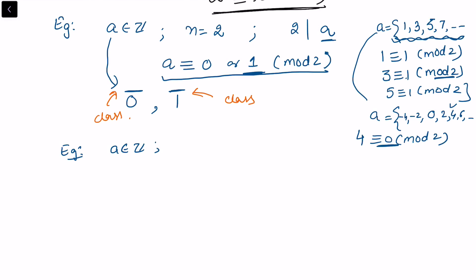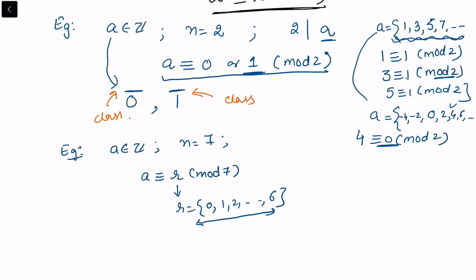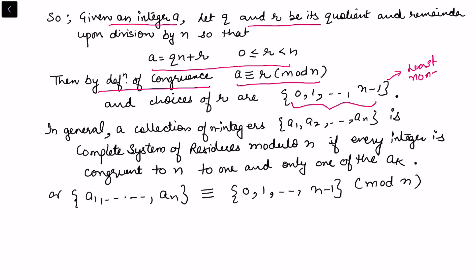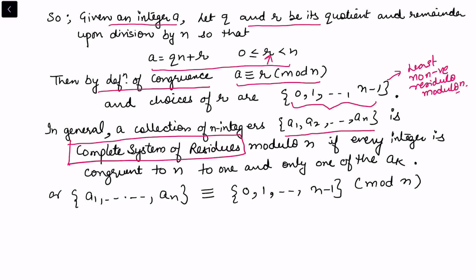Now suppose a is an integer and n equals 7. Then a is congruent to r modulo 7, where the possible values for r are 0, 1, 2, up to 6. The set of all these possible remainders is what we call the complete system of residues. Given an integer a, by the division algorithm there exist a quotient and remainder, and by the definition of congruence a is congruent to r modulo n. These values {0, 1, 2, ..., n-1} are called the least non-negative residues modulo n.